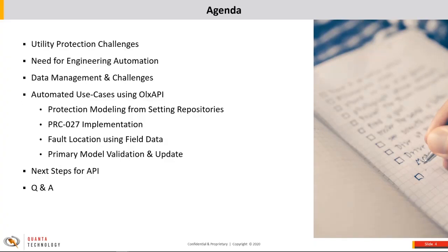Today's agenda: I'll be going through protection challenges at utilities and how the need for automation can help reduce some of those risks. Next I'll talk about data management and the challenges that go with that, which is a prerequisite for any type of automation. Then my colleague Xin-Nyang will take over and go through some mature use cases of utilizing the API, and we have four examples for you today.